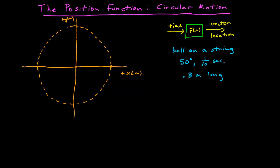So at t equals zero, the ball is horizontal to the ground, with the string along the positive x axis. If I want to draw the position vector at that point, it's represented by that yellow vector. The vector at t equals zero has a magnitude of 0.8 meters and lies along the positive x axis.